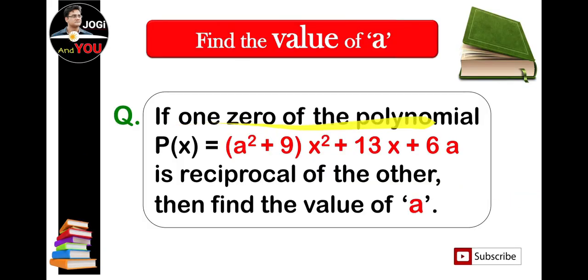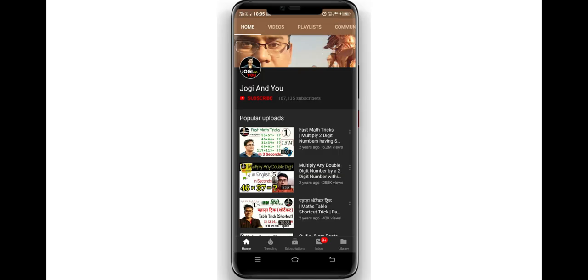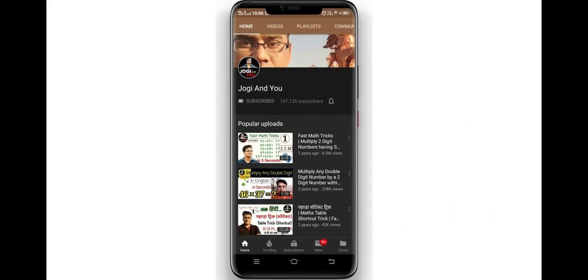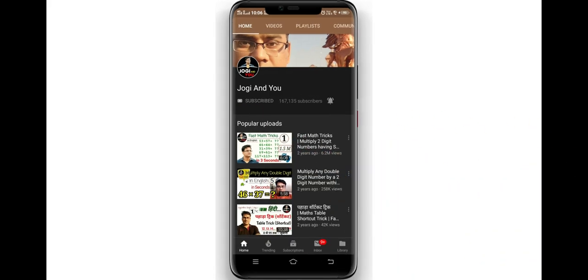The question is: if one zero of the polynomial P(x) = (a² + 9)x² + 13x + 6a is reciprocal of the other, then find the value of a. Before discussing the answer, subscribe to my channel and press the bell icon for fast notifications of my new videos.